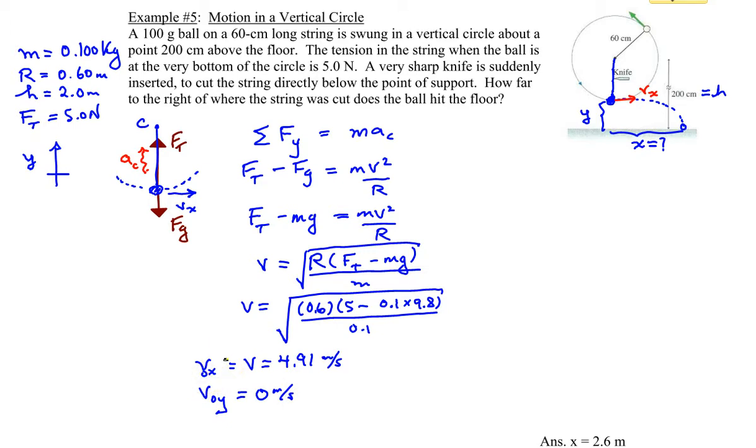So now the problem becomes a projectile motion problem. We're going to need to find the time in the air using y equals y0 plus v0y times t minus one half gt squared and then use that to find the horizontal distance afterwards.